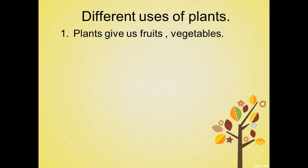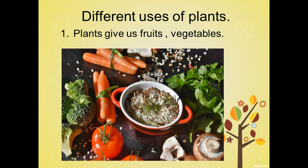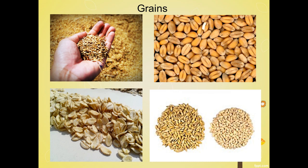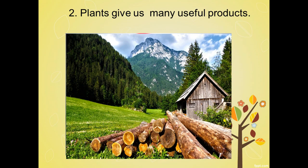We depend on plants for our various necessities. Plants give us food in the form of fruits, vegetables, and many types of grains from the seeds of different plants. We also get pulses — varieties of pulses — lentils, beans, and different types of peas from plants.